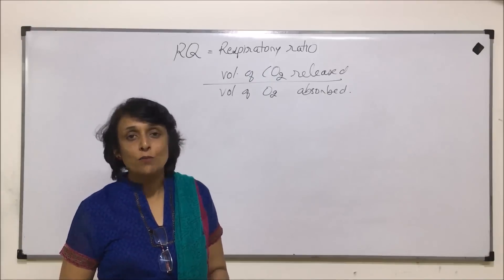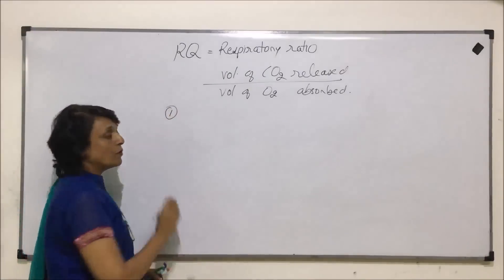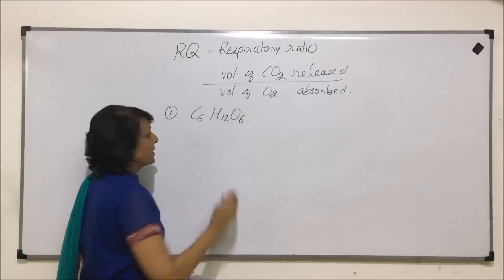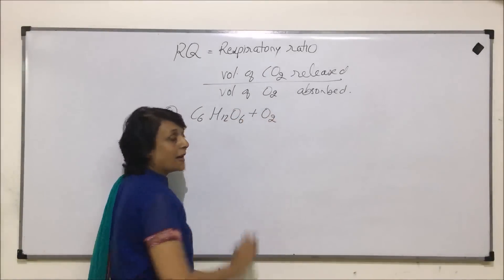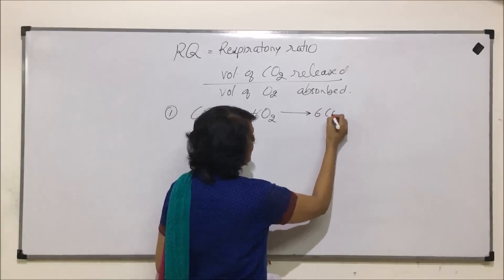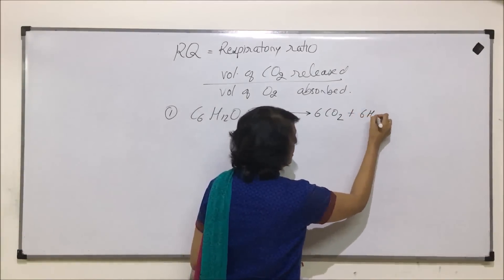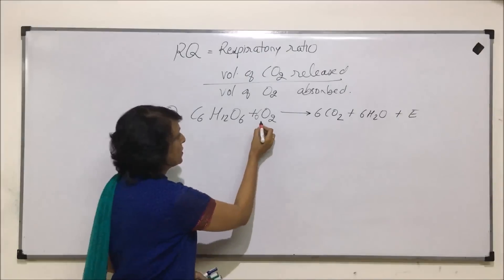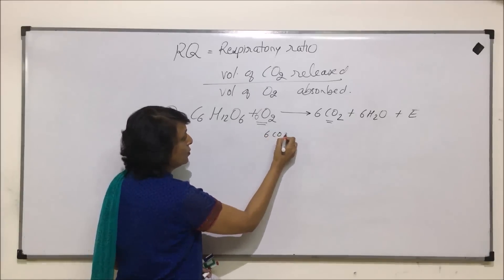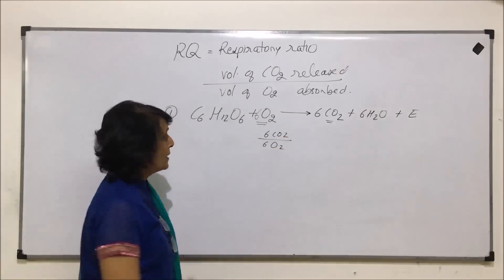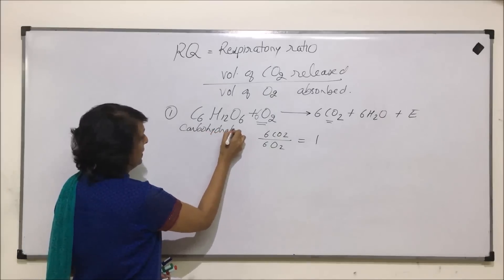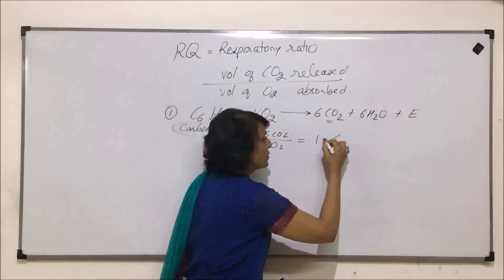If we want to know the RQ of carbohydrate, we write the reaction in which carbohydrate is broken down. The most common reaction is glucose — C6H12O6 — undergoing aerobic breakdown. We take 6 molecules of oxygen, and 6 CO2 molecules are produced along with 6 water molecules and energy. Putting these values: 6 CO2 over 6 O2 gives us 1. So in case of carbohydrates, the respiratory quotient is always 1.